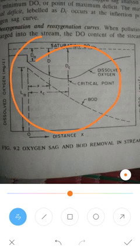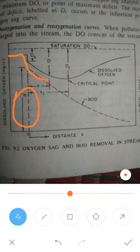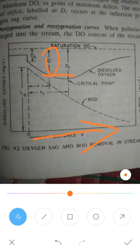The initial pollution load is called L-naught (L0). When this initial discharge enters the stream, the dissolved oxygen content in the stream starts to decrease. The oxygen deficit is called D. After decreasing, it starts to increase. The variation of the oxygen deficit D with the distance along the stream is shown, along with the BOD curve.